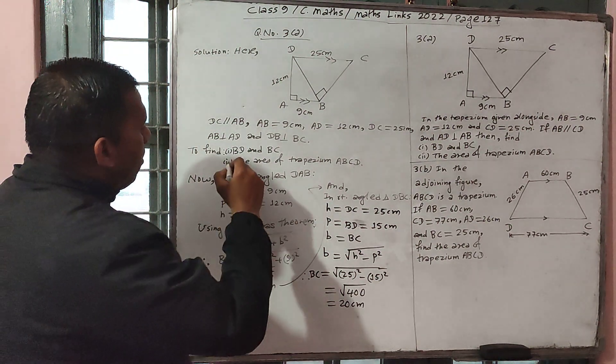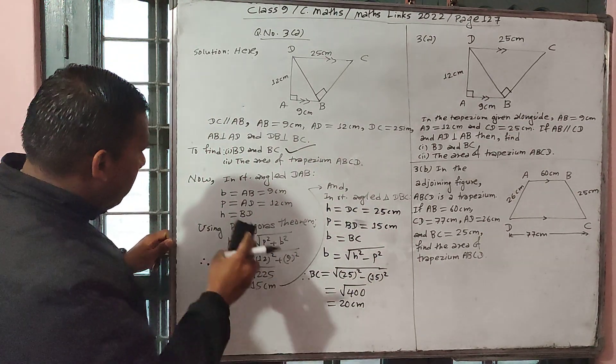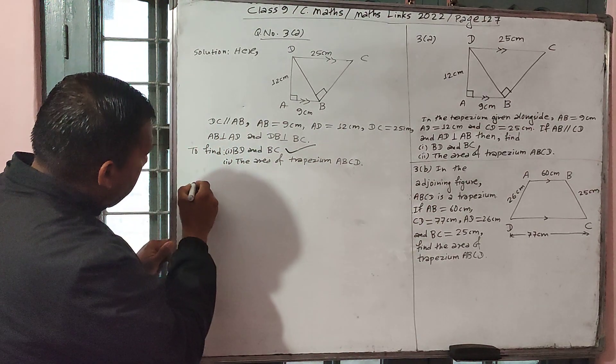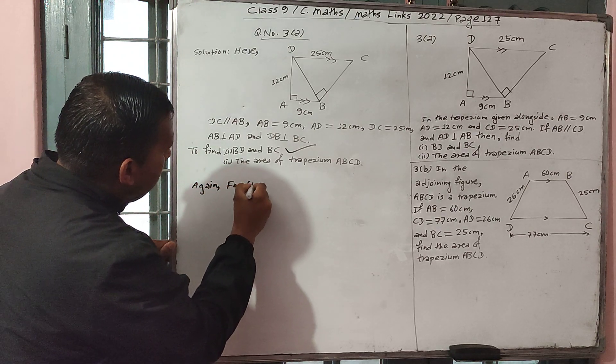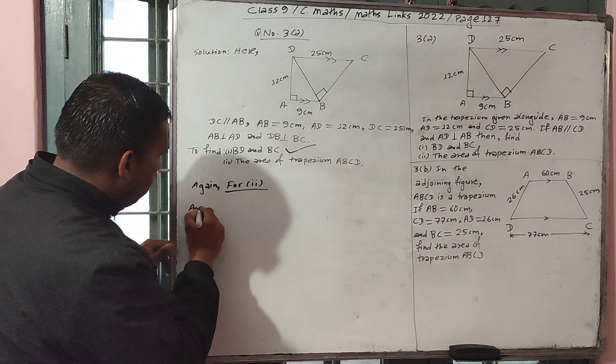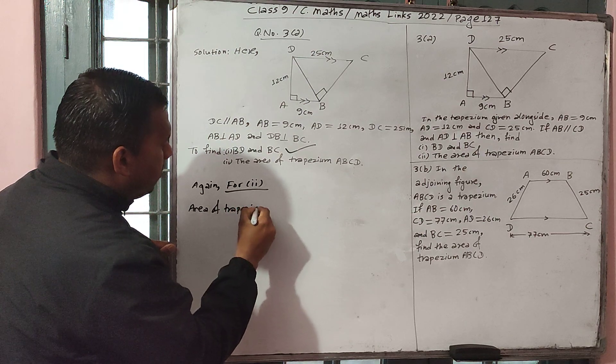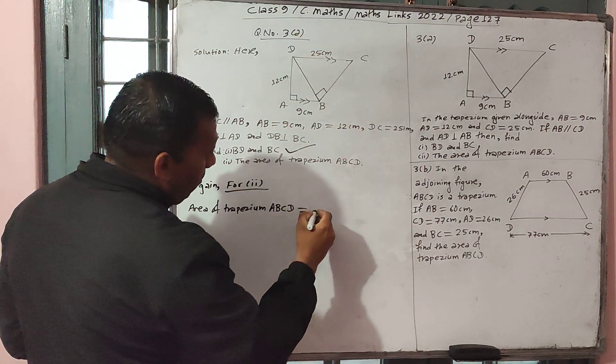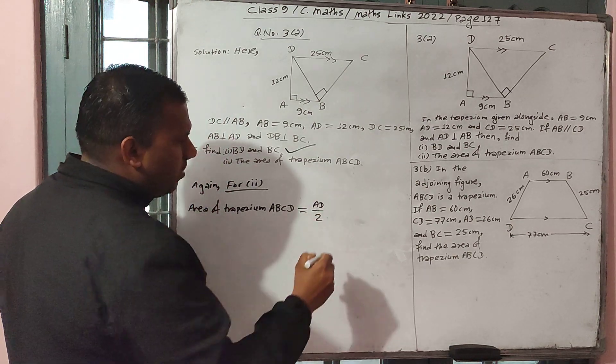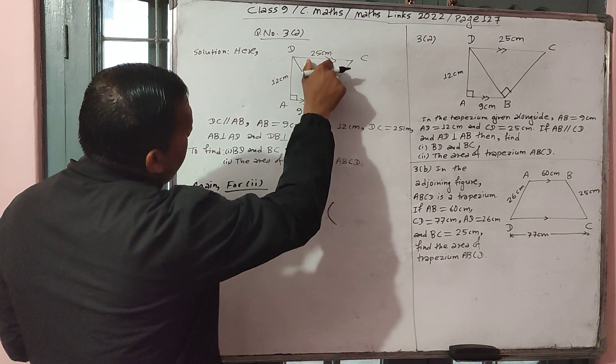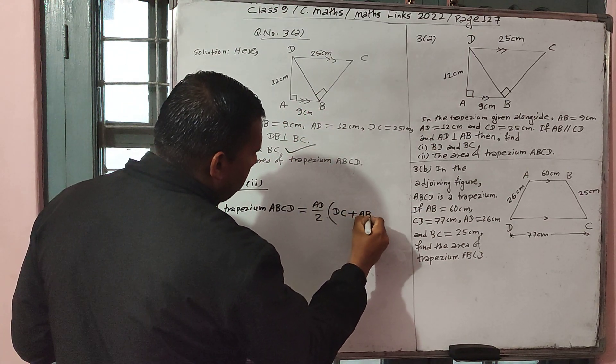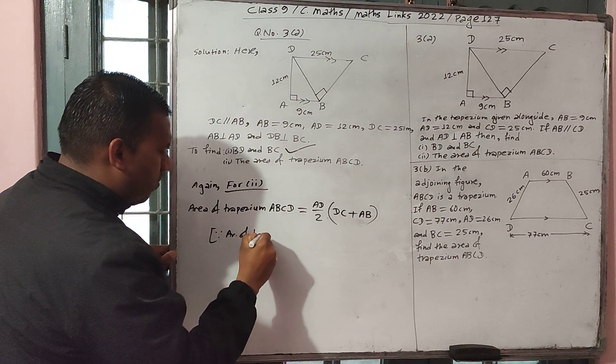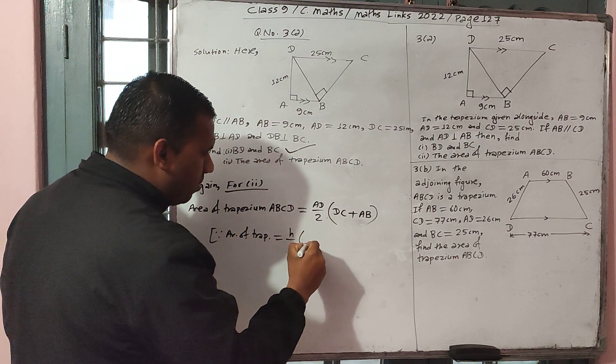We will finish this first part. Now again for second part, area of trapezium ABCD equal to height, height equal to sum of parallel sides. Parallel sides are DC and AB, so DC plus AB. Area equal to height equal to sum of parallel sides.